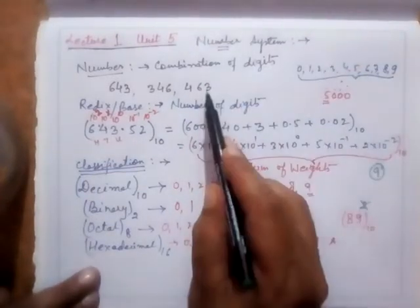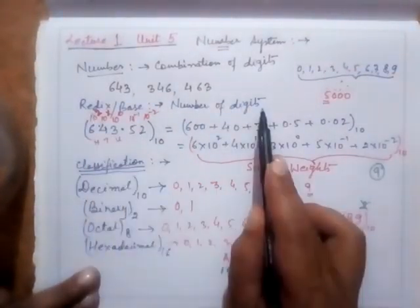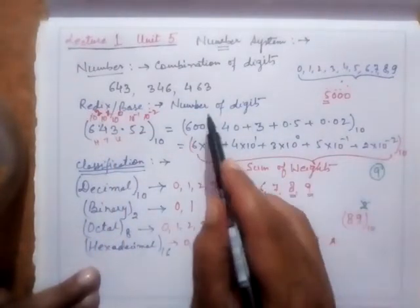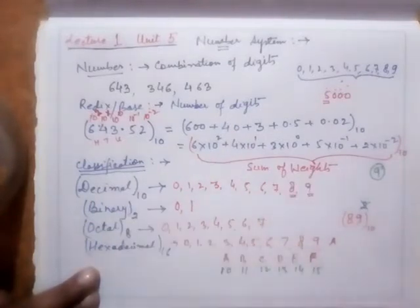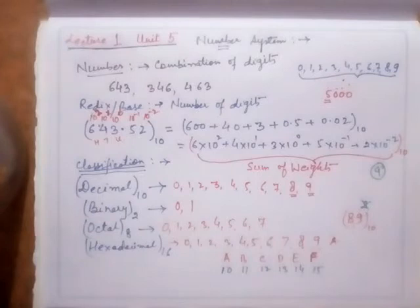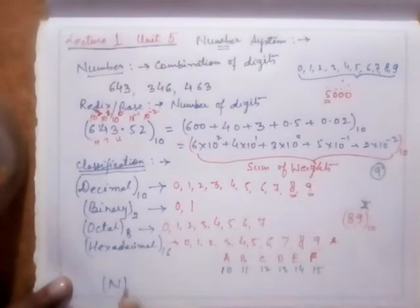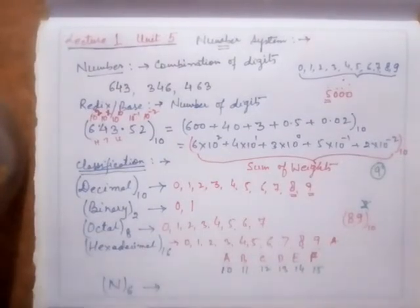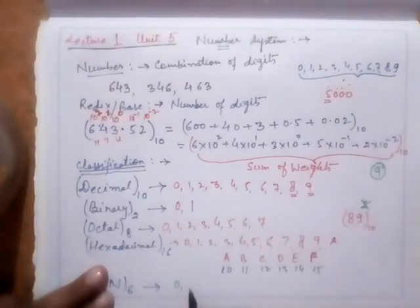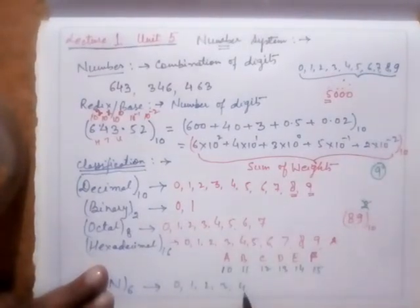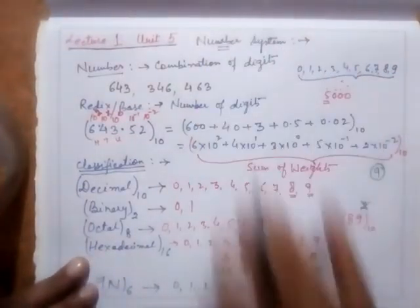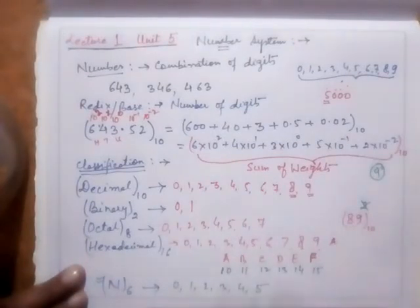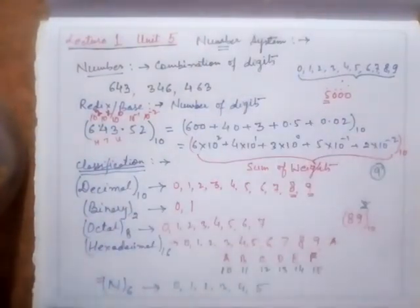So that's about the number system — what a number is, and what radix or base means. The radix or base is simply the total number of digits available in a particular number system. Apart from these standard types, you can also have a user-defined number system. For example, a number system with base 6 having digits 0, 1, 2, 3, 4, and 5. Such problems can appear in examinations.